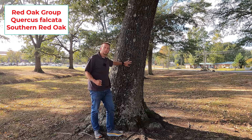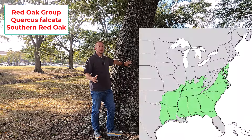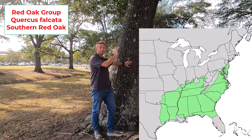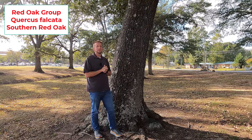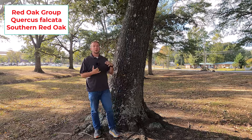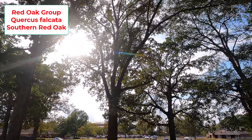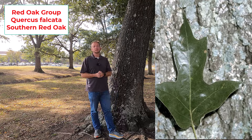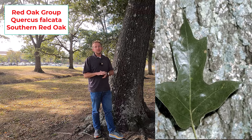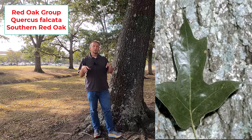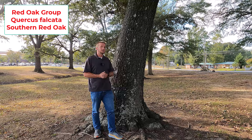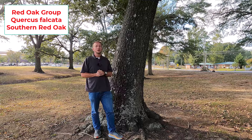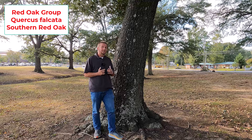Quercus falcata, the southern red oak — native from Virginia down to north Florida and over to Texas. This is a tree I can ID from 100 to 200 yards away because of the way the leaves droop, pointing straight downward, looking like bells. It has three to five lobes on a bell-shaped leaf. It's a red oak family member. This tree reaches only 60 to 80 feet tall — the specimen I'm standing under is probably in the 50 to 60 foot range, which is a really big southern red oak.